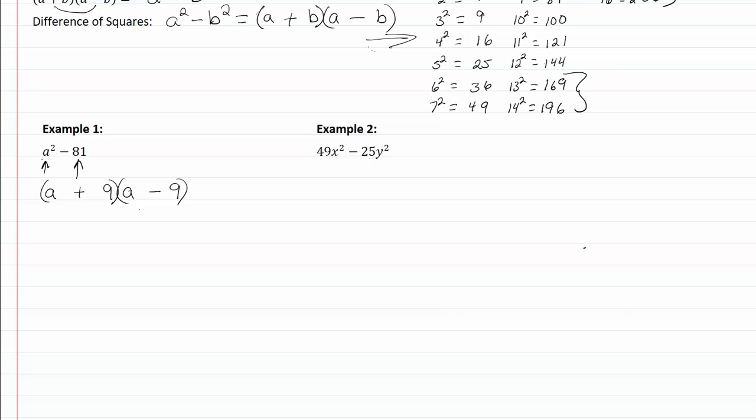It doesn't matter the order. You could have just as easily written minus nine, plus nine, but you want to make sure you have opposite signs.